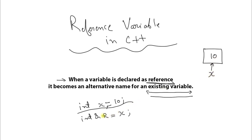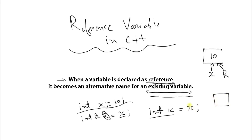Now, when we make r as the reference of x, it is nothing but creating another variable, but that variable is also pointing to the same memory location. This is the difference between a normal variable and a reference variable. If you had created some other normal variable like integer k = x, since k is not a reference variable, a separate memory will be created for k, and whatever is in x will be copied there. So k will point to its own memory location and x will point to its own. If you change k to 11, then only k changes, not x.